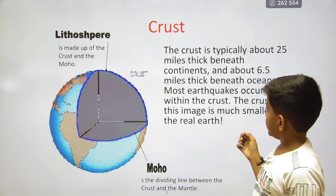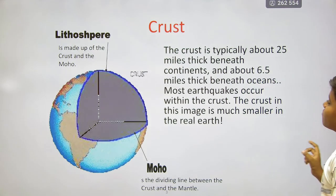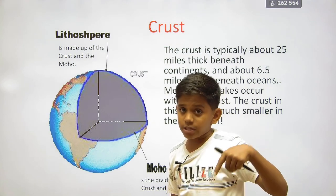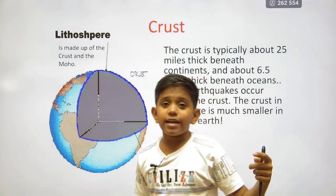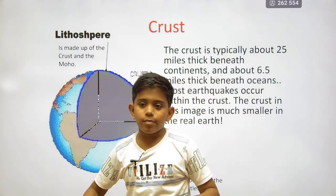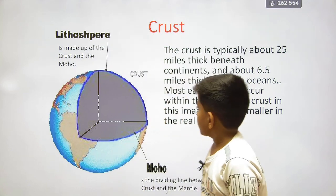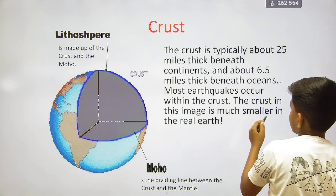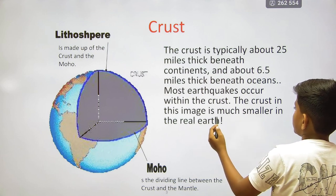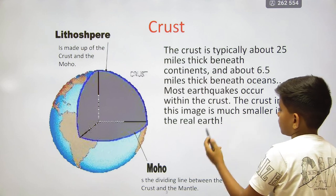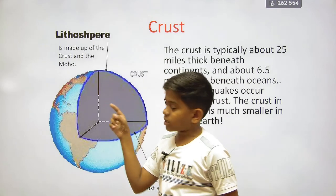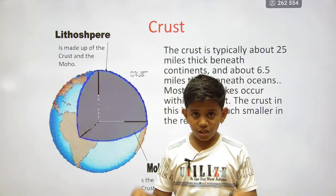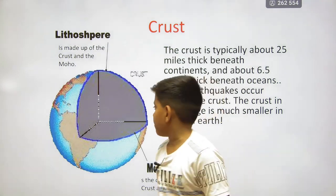The crust is typically about 25 miles thick beneath continents and about 6.5 miles thick beneath oceans. Most earthquakes occur within the crust. In this image the crust looks small, but in the real earth it is very deep — about 25 miles.